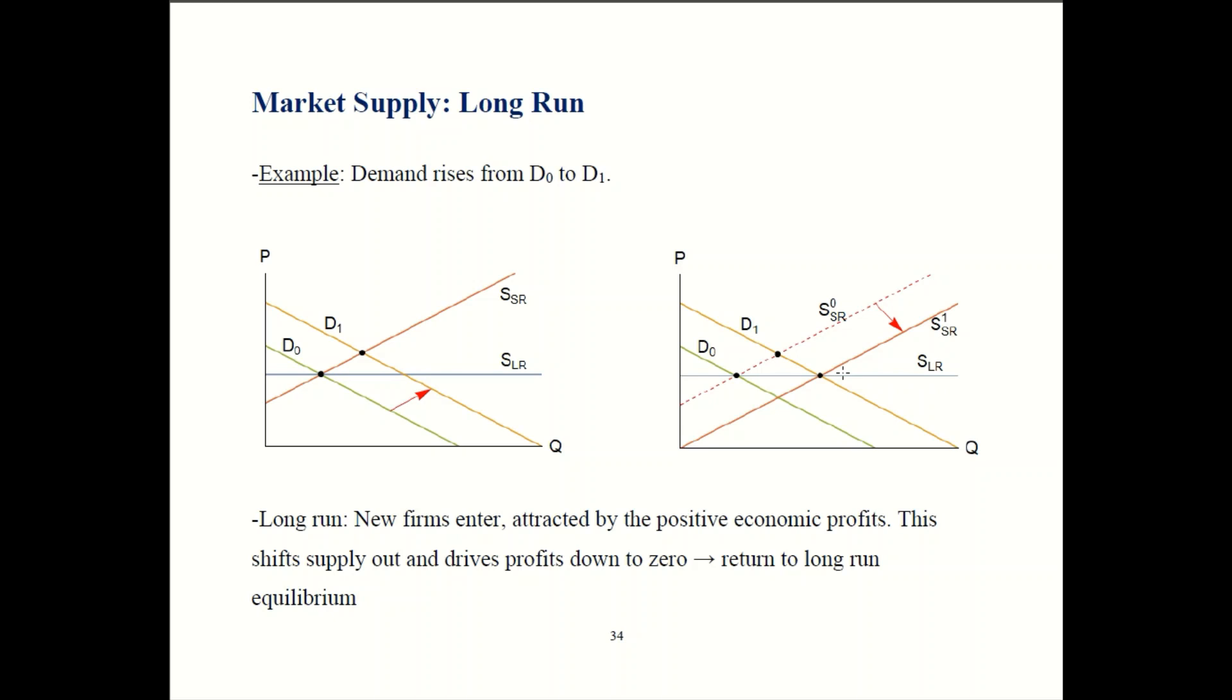So it's a very similar story to what we saw when demand shifts back. So either way once demand shifts you get a temporary profit or a temporary loss. But then in the long run new firms enter or old firms leave and that brings profits back down to zero. So you always get zero economic profits in the long run.